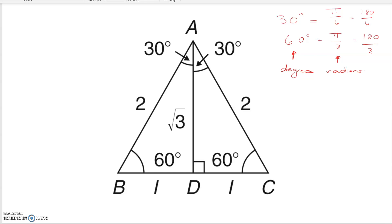Now let's have a look at this diagram. It is an equilateral triangle, and the sides are 2 units, and because it's equilateral all the angles are 60 degrees, or another way of writing that is pi by 3.